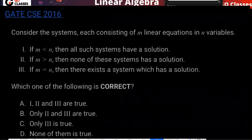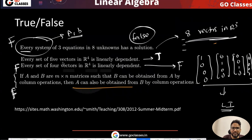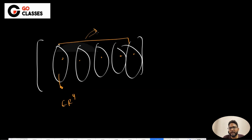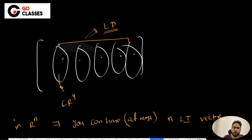A student asks for clarification: every set of five vectors in R4 is linearly dependent - how is this true? The answer: since this is in R4, you can have at most four linearly independent vectors. You cannot have five linearly independent vectors in R4. So if you take five vectors, it will automatically be linearly dependent. In Rn, you can have at most n linearly independent vectors. If you have n+1 or more vectors, they automatically become linearly dependent.